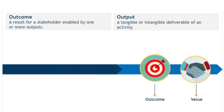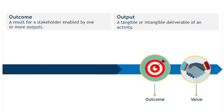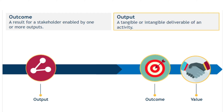Think about the terms outcome and output. These two words sound similar and, in ITIL, are related, so it would be easy to mix them up. However, as both terms are explicitly included in the exam syllabus, it is important to be clear on their meaning. An outcome is a result that a customer wants to achieve — it is the desire to achieve outcomes that leads a consumer to consider different services. Outputs are the tangible and intangible deliverables of an activity. Within the context of a service, the service outputs enable the achievement of the desired outcomes.